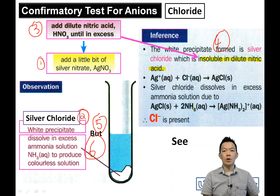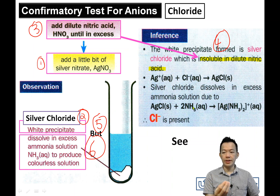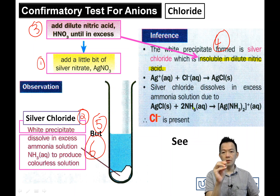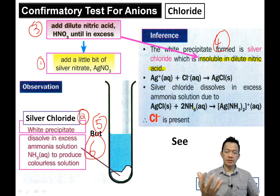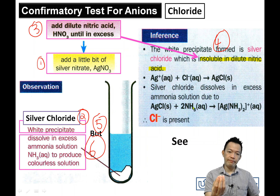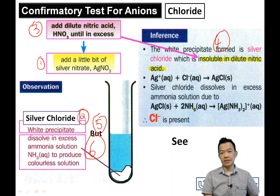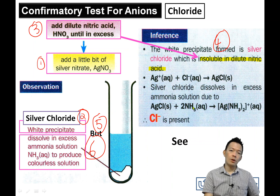So this is what we call the chloride test — you need to memorize it. The answer — long or short — depends on the question. If it gives you one mark: add silver nitrate, white precipitate forms. If it gives you two marks, add one more sentence: the white precipitate is insoluble in excess of dilute nitric acid. Beside chloride, what else can we test? Let's look at sulfate next.